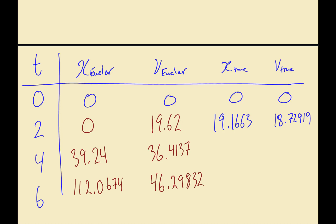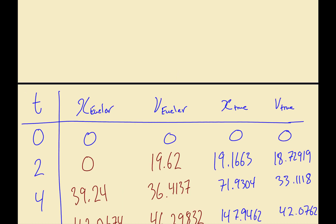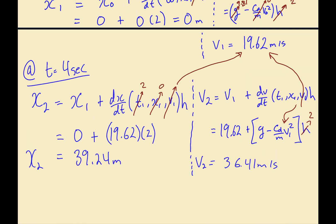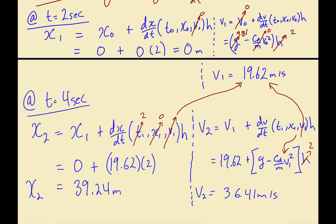The true values at t = 2, 4, and 6 seconds are: x = 19.1663 and v = 18.7292; x = 71.9304 and v = 33.1118; and x = 147.9462 and v = 42.1276. Given what we have so far, try to find the values at time equals six seconds.